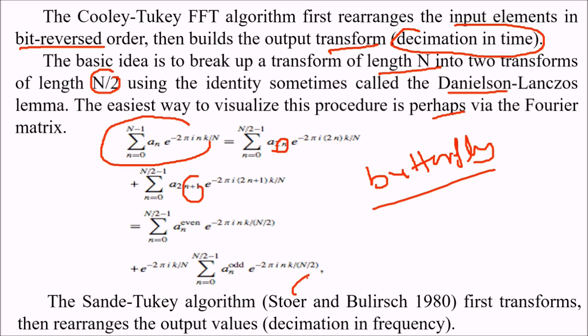The Sande-Tukey algorithm (Stoer and Bulirsch) first transforms, then rearranges the output values. The rearrangement is done after, that is decimation in frequency. This was the basic idea about the FFT. Thank you so much.